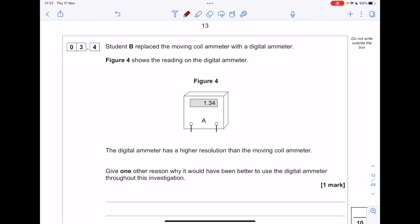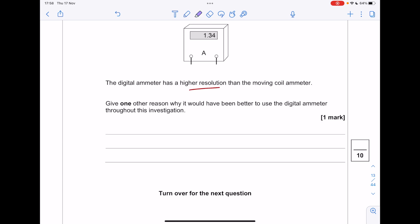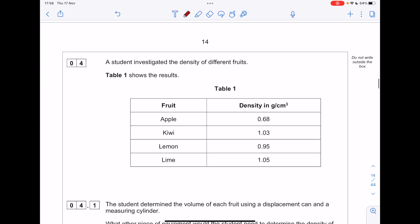It should be replaced the moving coil ammeter with a digital ammeter. Figure 4 shows the reading. The digital ammeter has a higher resolution. Give one other reason why it would have been better to use the digital ammeter throughout this investigation. Mainly because it's a lot easier to read, so there's much less chance of misreading the value. It can also give a reading closer to the true value. If you're feeling fancy, you can talk about there being no parallax error, which is all to do with lining up your eye with the ammeter.